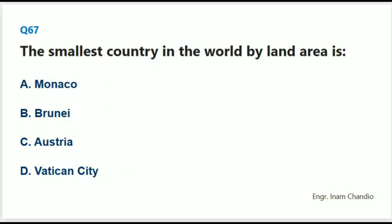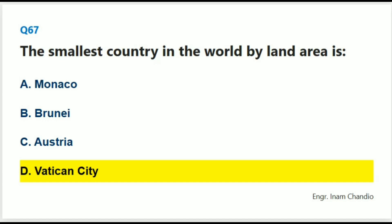The smallest country in the world by land area is: The correct answer is D. Vatican City.